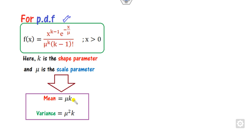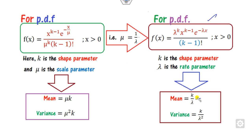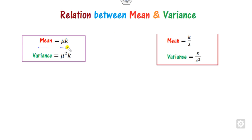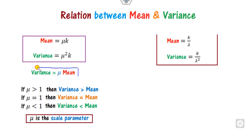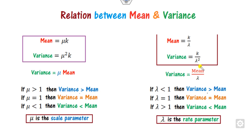In summary, using the first form of the PDF the mean and variance are expressed in terms of mu and k. Using the second form with rate parameter lambda, the mean becomes k/lambda. Dividing the variance by the mean gives mu, so variance equals mu times mean. This relation holds and changes depending on whether mu is less than, greater than, or equal to a reference value.